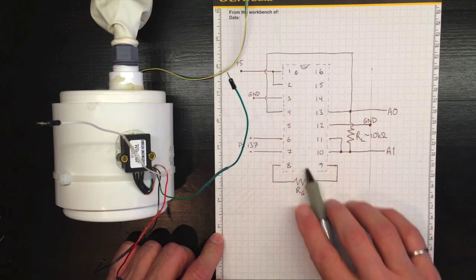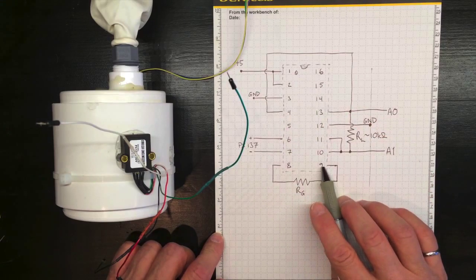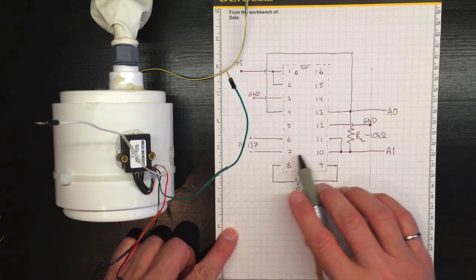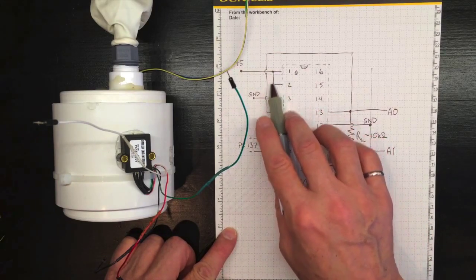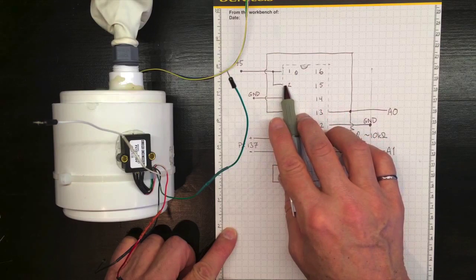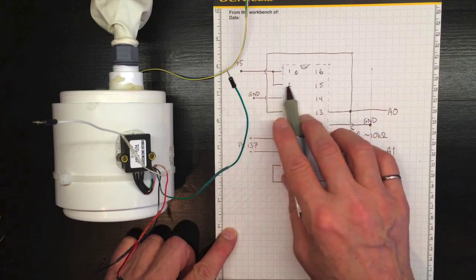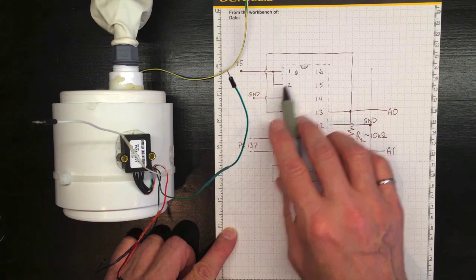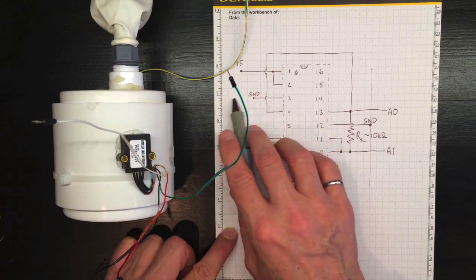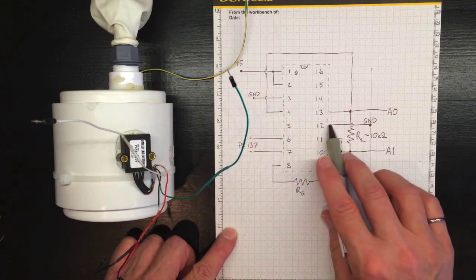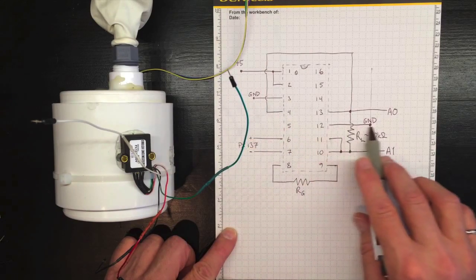So we'll use the INA125 chip again, just like we've used all along. We'll use a similar hookup to what we've used before. Power on the first pin, also connected to the second pin, so that we get a full power supply and we keep the chip awake. Ground to pin 3, so that we've got the power supply grounded, and also ground to pin 12.